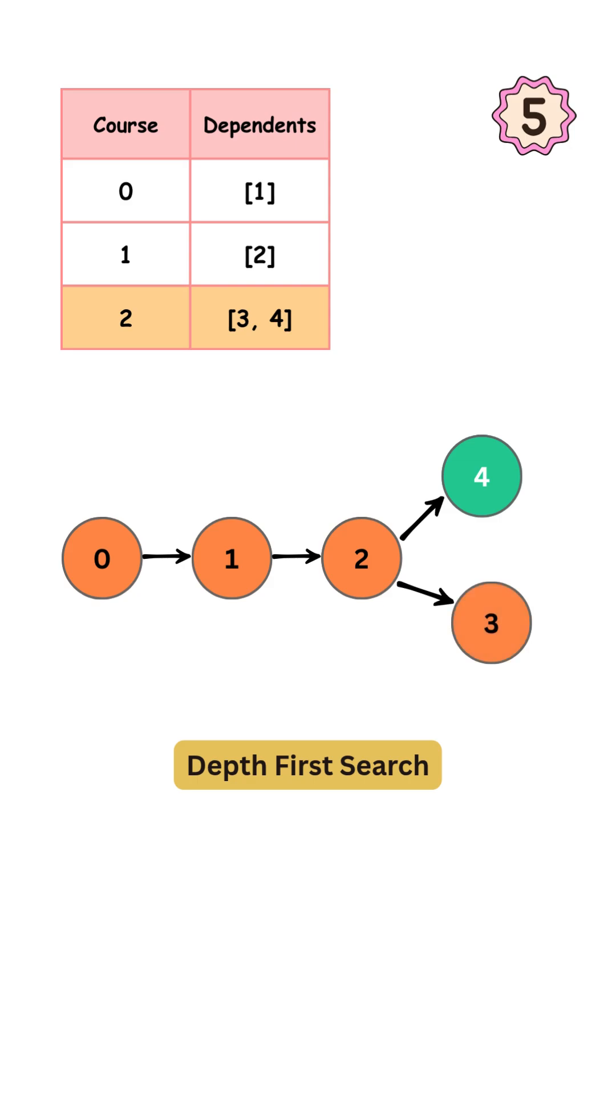Then we visit node 3. Same thing, no outgoing edges, so we mark it as explored. Now we backtrack. Mark node 2 as explored, then node 1, and finally node 0. Since we didn't encounter any node that was already in the discovered state during DFS, there is no cycle, so the answer is true. Let's add one more prerequisite to the list.